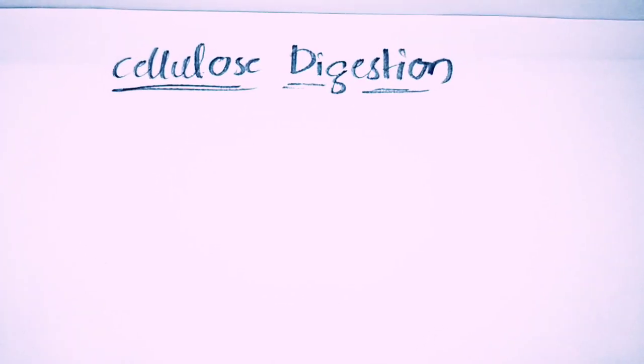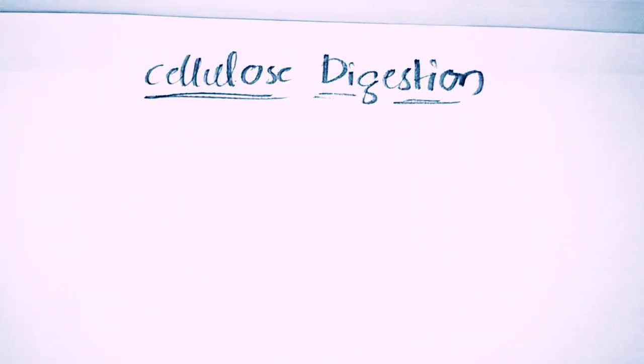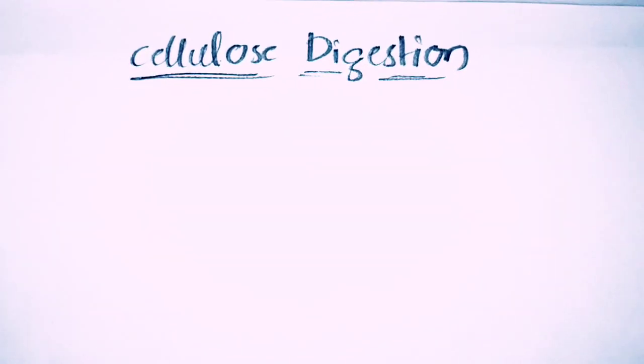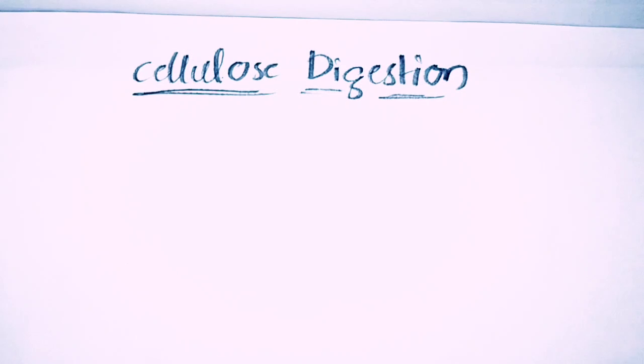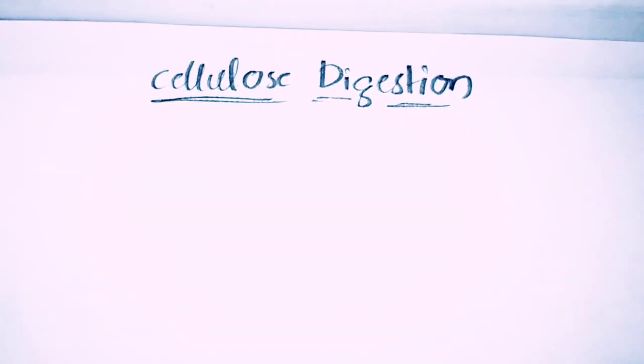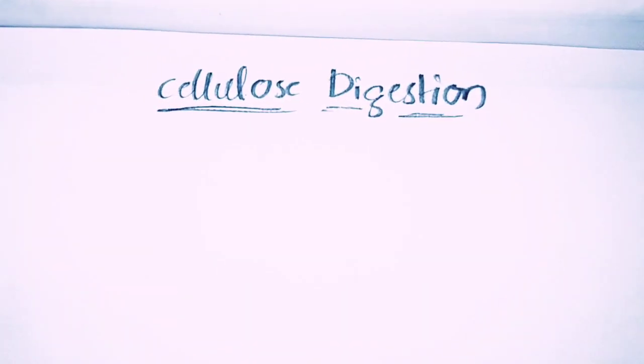Then what is cellulose digestion? Cellulose digestion is a process of the breakdown of cellulose into glucose in the presence of or with the help of a cellulase enzyme.